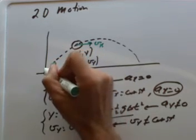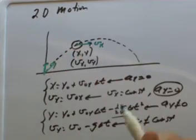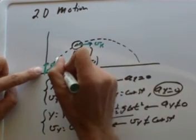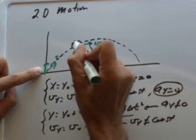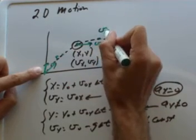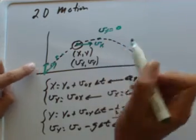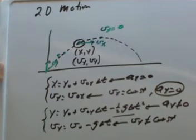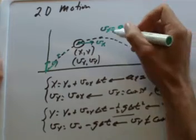Now, V sub Y will change. Like, for instance, over here, V sub Y is very large, just as it got launched. But as it flies through the air, the V sub Y gets smaller and smaller until at the very apex right here, you actually reach a point where V sub Y is equal to zero. At the very top there, it doesn't have any Y velocity anymore because it's about to start coming back down again.